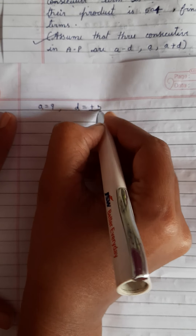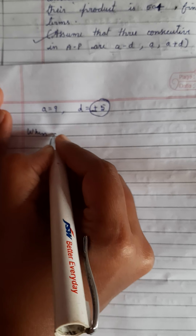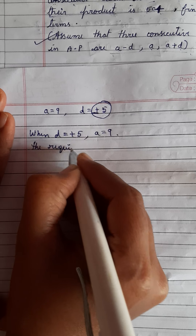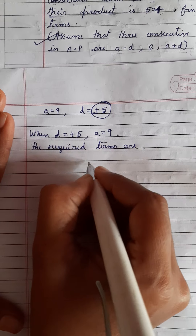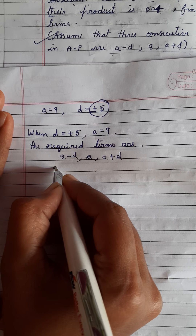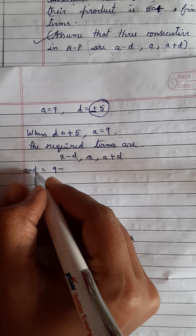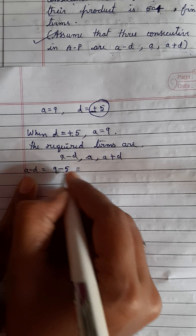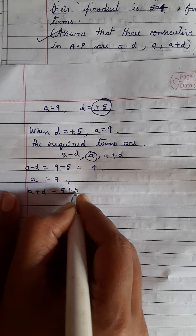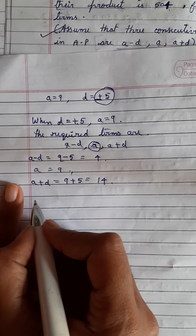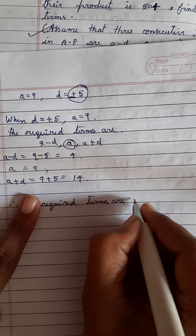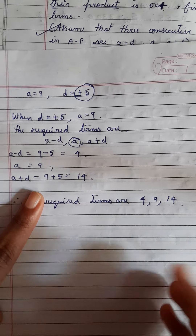We have a=9 and d = ±5, giving two cases. When d = +5: the three terms a-d, a, a+d are 9-5=4, a=9, and 9+5=14. So the required terms are 4, 9, and 14.